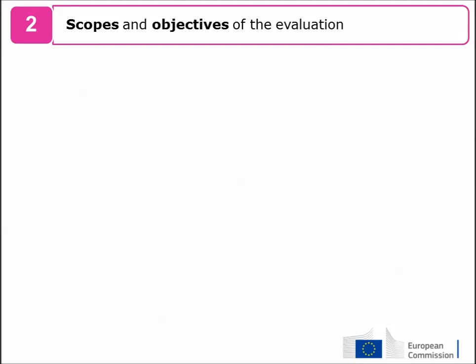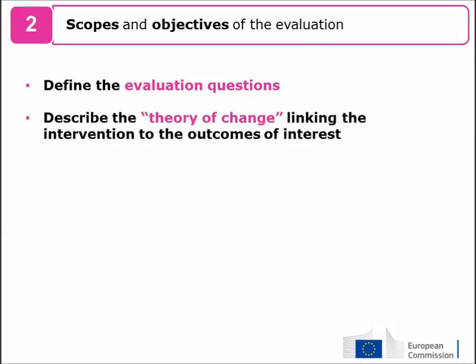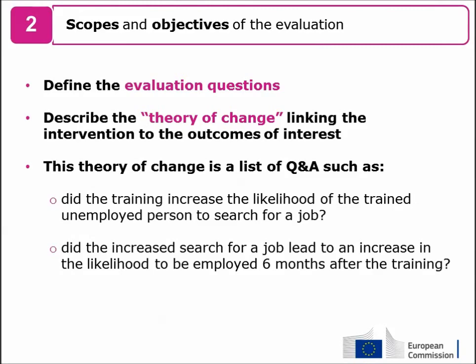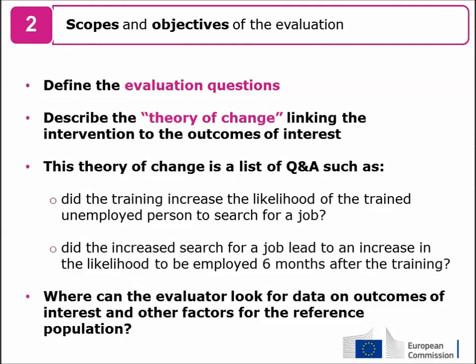The second section of the terms of reference should present the specific scope, expected effects, and outcomes of interest of the intervention. Precisely, what is needed is to define the evaluation questions and describe the theory of change linking the intervention to the outcomes of interest. This theory of change is a list of questions such as: did the training increase the likelihood of the trained unemployed person searching for a job, and did the increased search lead to greater likelihood of employment six months after the training? Also specify where the evaluator can find data on outcomes of interest for the reference population.